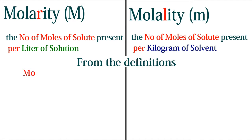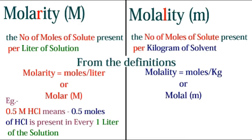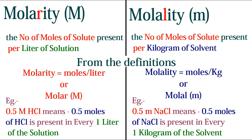From the definitions, molarity equals moles per liter and molality equals moles per kilogram. For example, 0.5 molar HCl means 0.5 moles of HCl is present in every 1 liter of the solution, and 0.5 molal NaCl means 0.5 moles of NaCl is present in every 1 kilogram of solvent.